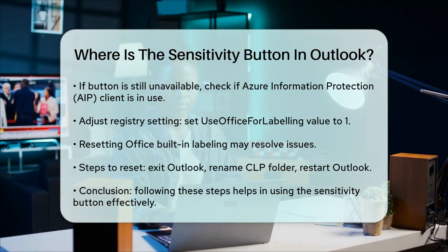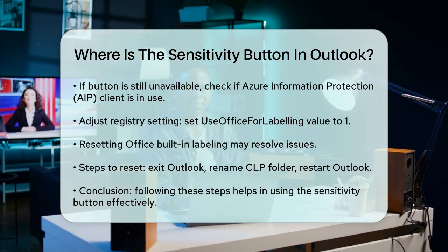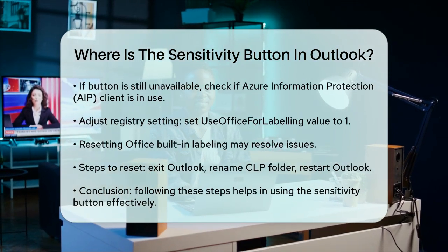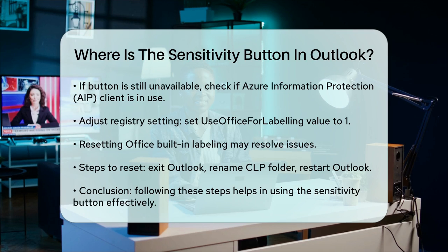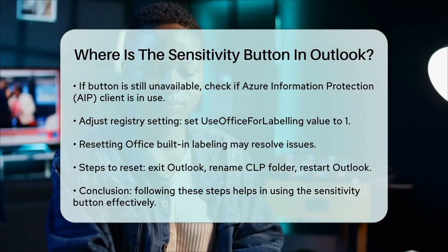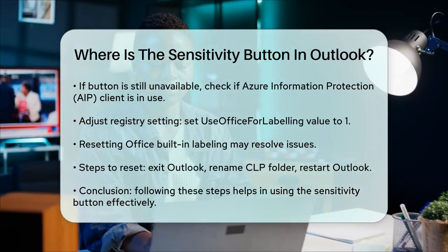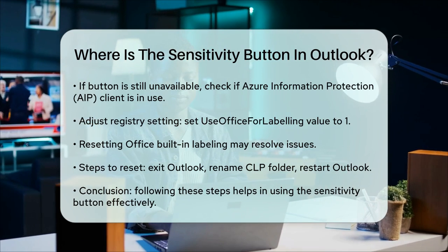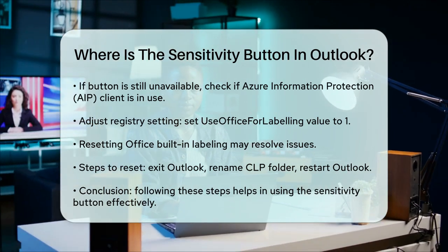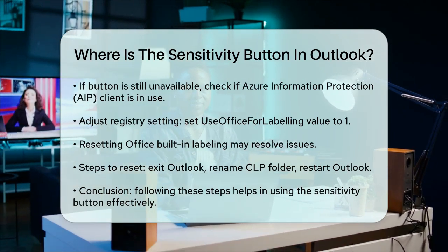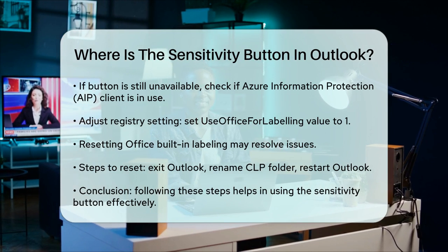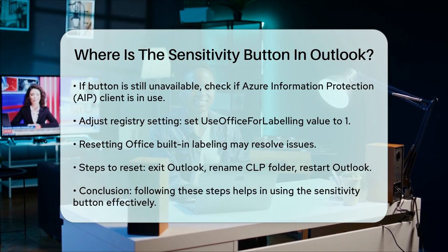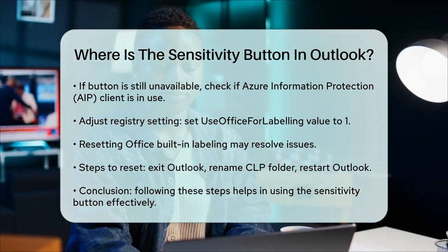In some cases, resetting the Office built-in labeling can also resolve the issue. To do this, exit Outlook, navigate to the %LocalAppData%\Microsoft\ALP directory, rename the CLP folder, and then restart Outlook. This will force Outlook to reconnect to the Microsoft Information Protection Services and download the labels or policies again.